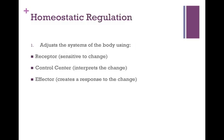In order for homeostatic regulation to occur, whether it's autoregulation or extrinsic regulation, there are three things used in the system. A receptor — that's the thing that's sensitive to the change, whatever the change might be. A control center, like the brain, that's going to interpret the change. And an effector, where that control center will send out a command and the effector will then create a response.